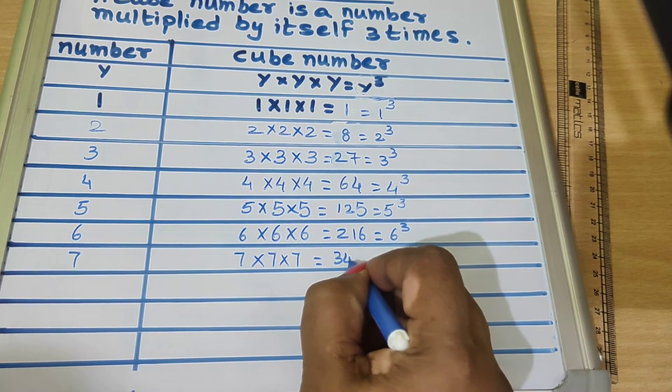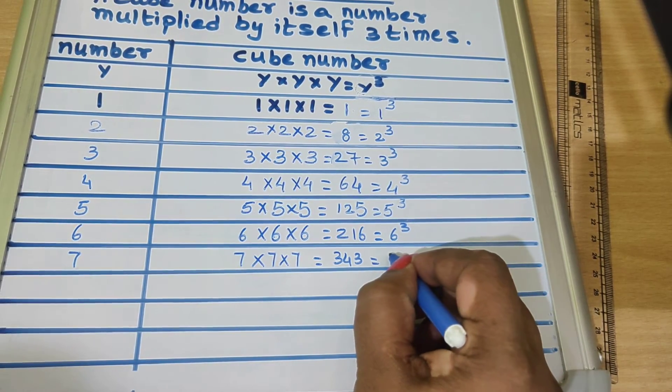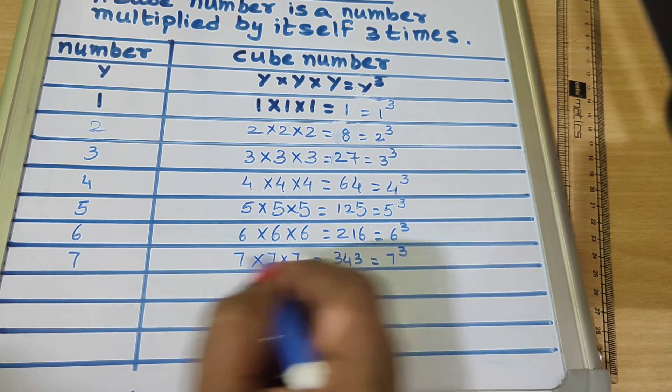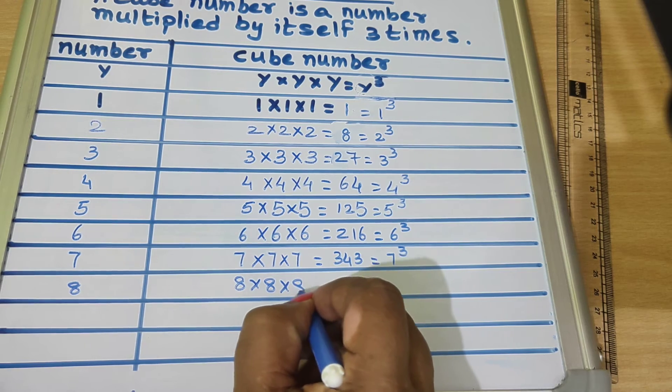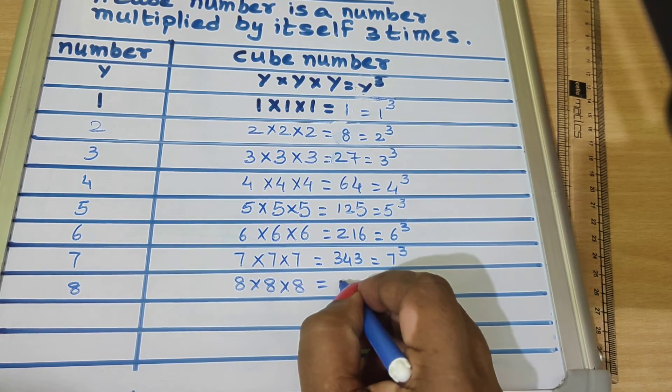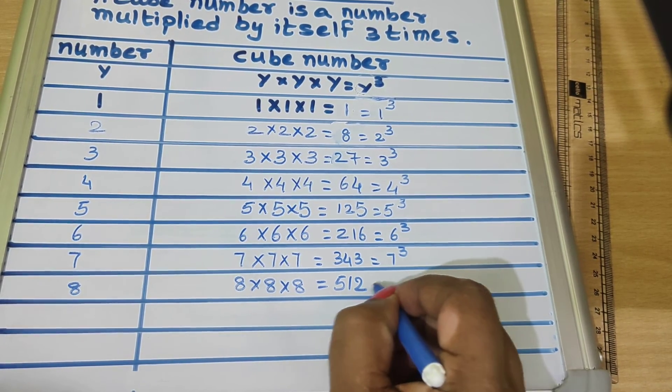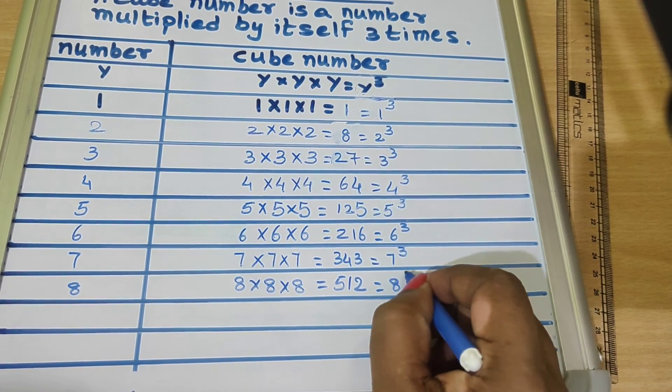343, we write as 7 cube. 8 into 8 into 8 equals 512, we write as 8 cube.